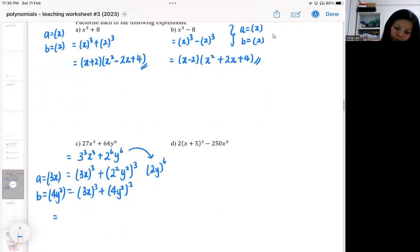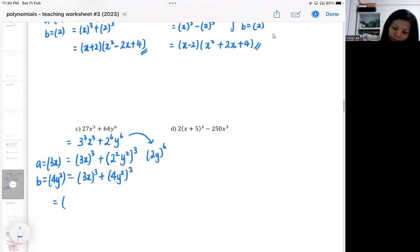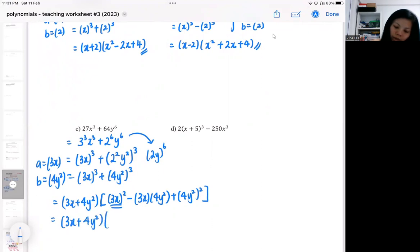Apply it into the formula, the first formula a plus b: 3x plus 4y². A square minus ab plus b square. It looks pretty long, so use a square bracket to help you. Here, my x², here 12xy², here will be 16y⁴. This one is a bit long because the a and b is a bit bigger.